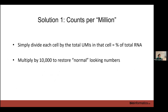We want to normalize to remove this library size effect so all cells have an equal amount of expression. The first solution was counts per million - though in practice it's not actually per million anymore. We take each cell, divide by the total number of UMIs in that cell, then multiply by 10,000 so our numbers look normal. Most gene expression values divided by total UMIs would be something like 0.0003, which is annoying, so multiplying by 10,000 gives us 3 instead. Some tools use the median total UMIs across all cells rather than 10,000, but it's effectively the same thing.